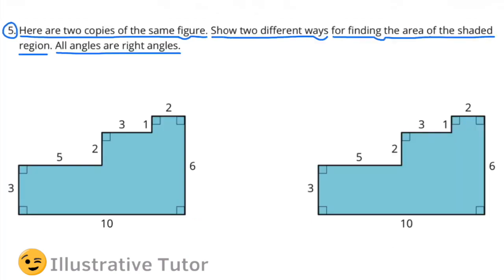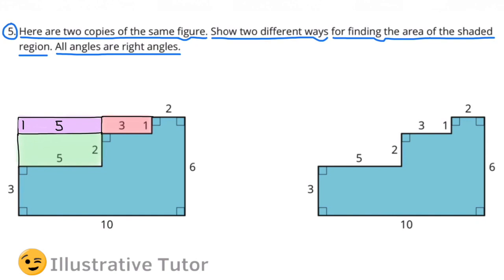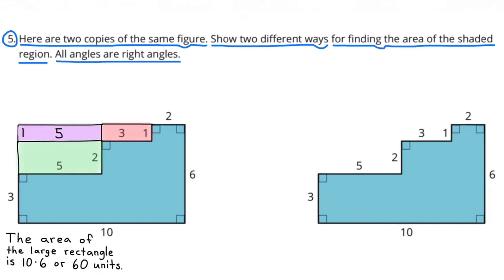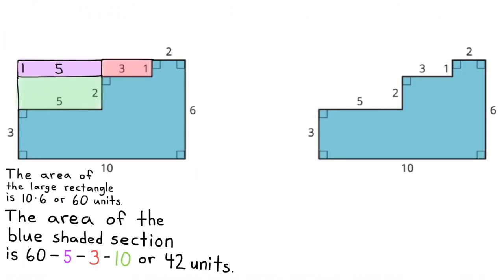Number 5. Here are two copies of the same figure. Show two different ways for finding the area of the shaded region. All angles are right angles. The area of the large rectangle is 10 times 6, or 60 units. The area of the blue shaded section is 60 minus 5 minus 3 minus 10, or 42 units.